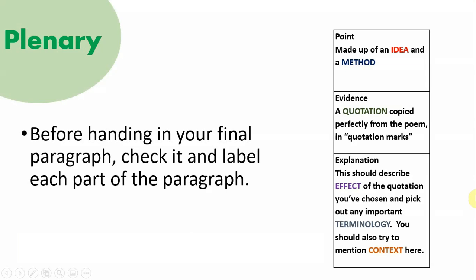And finally, our plenary: before handing in your final paragraph, check it and label each part of that paragraph. Look for your point made up of an idea and a method — label it I and M. Label your quotation. Pick out where you've talked about effect: show, suggest, and symbolise. Label the terminology, and also pick out where you have written about context. When you hand this in to your teacher they should be able to see, just by glancing at it, where you have done I, M, Q, E, T, and C. If they can't, then you haven't fully completed this task, so please make sure it is done before you hand in.